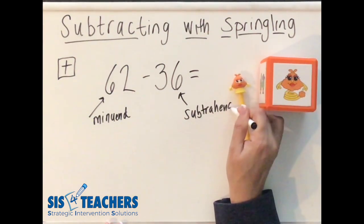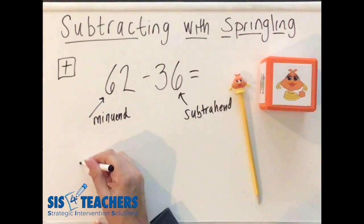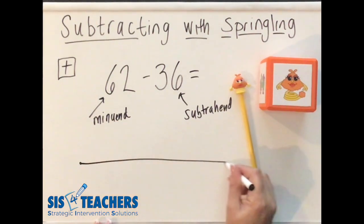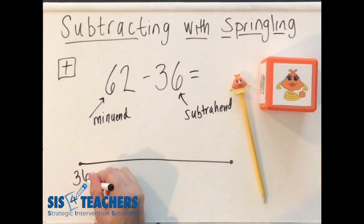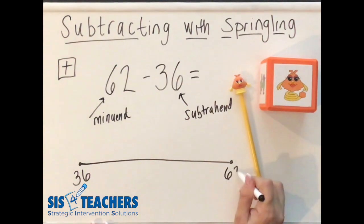When we make our open number line, we want to make it in order of how we're going. I'm going to make my open number line here. I'm going to put my subtrahend here because that would come first when I'm counting and put my minuend at the end.